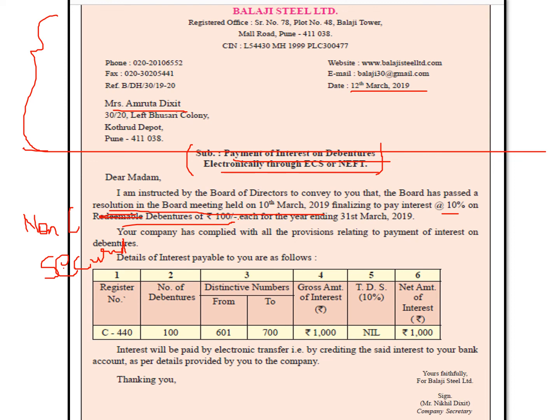Your company has complied with all the provisions related to payment of interest. Details of debenture interest: folio number, number of debentures 100, distinctive numbers, gross amount 1,000, TDS 0, net amount 1,000 (gross minus TDS equals net). Do I need to write the interest warrant number? No, because I am not supposed to send the interest warrant. Instead, write: 'Interest will be paid by electronic transfer, that is by crediting the said interest to your bank account as per the details provided by you to the company.'